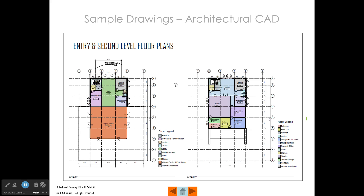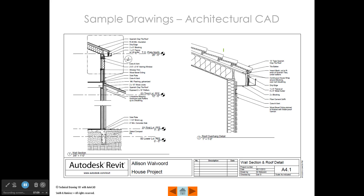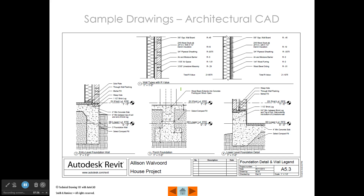This is the floor plan of a building that was also created using a 3D model in software called Revit — the floor plan is derived directly from the 3D model. These are some construction details: a wall section over here and some details where the roof joins to the wall. These can be derived directly from a 3D model or drawn as just 2D line drawings — either one. This was done in Revit; if you were doing this in 2D, you might use AutoCAD. These are also some Revit drawings that show the foundation details for a building, derived from a 3D model.